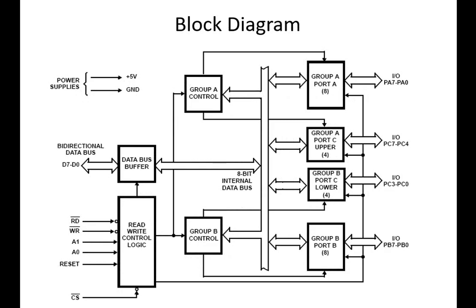This is the block diagram of the Programmable Peripheral Interface (PPI). We have a data bus buffer which is bidirectional, connected with D0 to D7 and directly connected with the internal bus. There are two group controllers — Group A and Group B — connected with the read/write control logic. The read/write control logic has write, read, address, reset, and control signals. A pulse is generated and sent to Group A and Group B. Group A contains Port A and the upper Port C, while Group B contains the lower Port C and Port B.